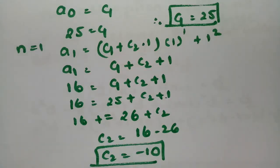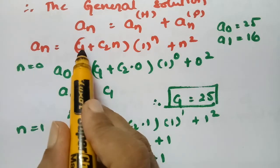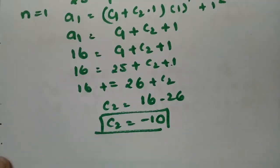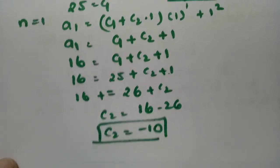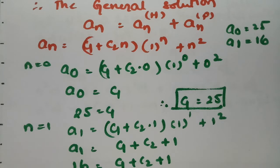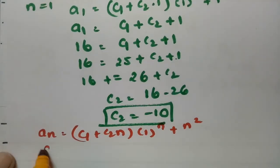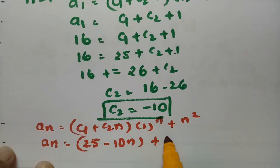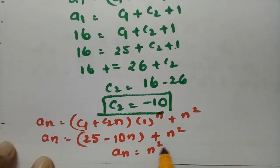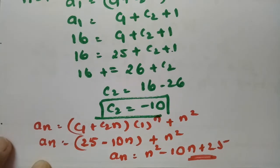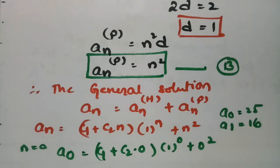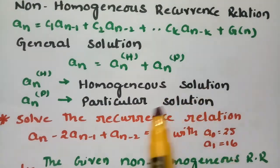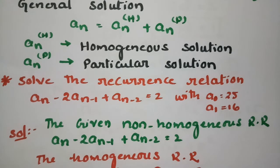We now have C1 = 25 and C2 = -10. Substituting into the general solution: a_n = 25 + (-10)·n + n² = n² - 10n + 25. This is the required general solution for the given non-homogeneous recurrence relation.